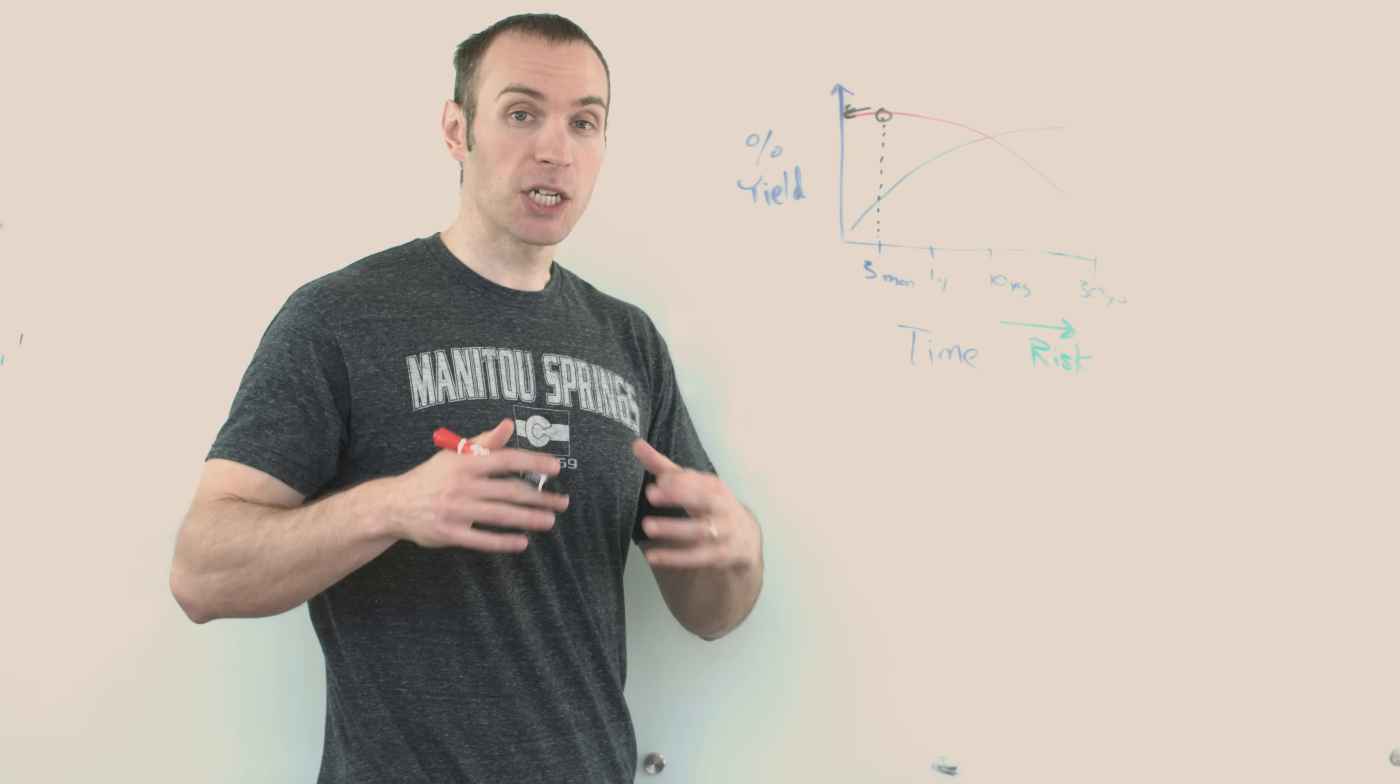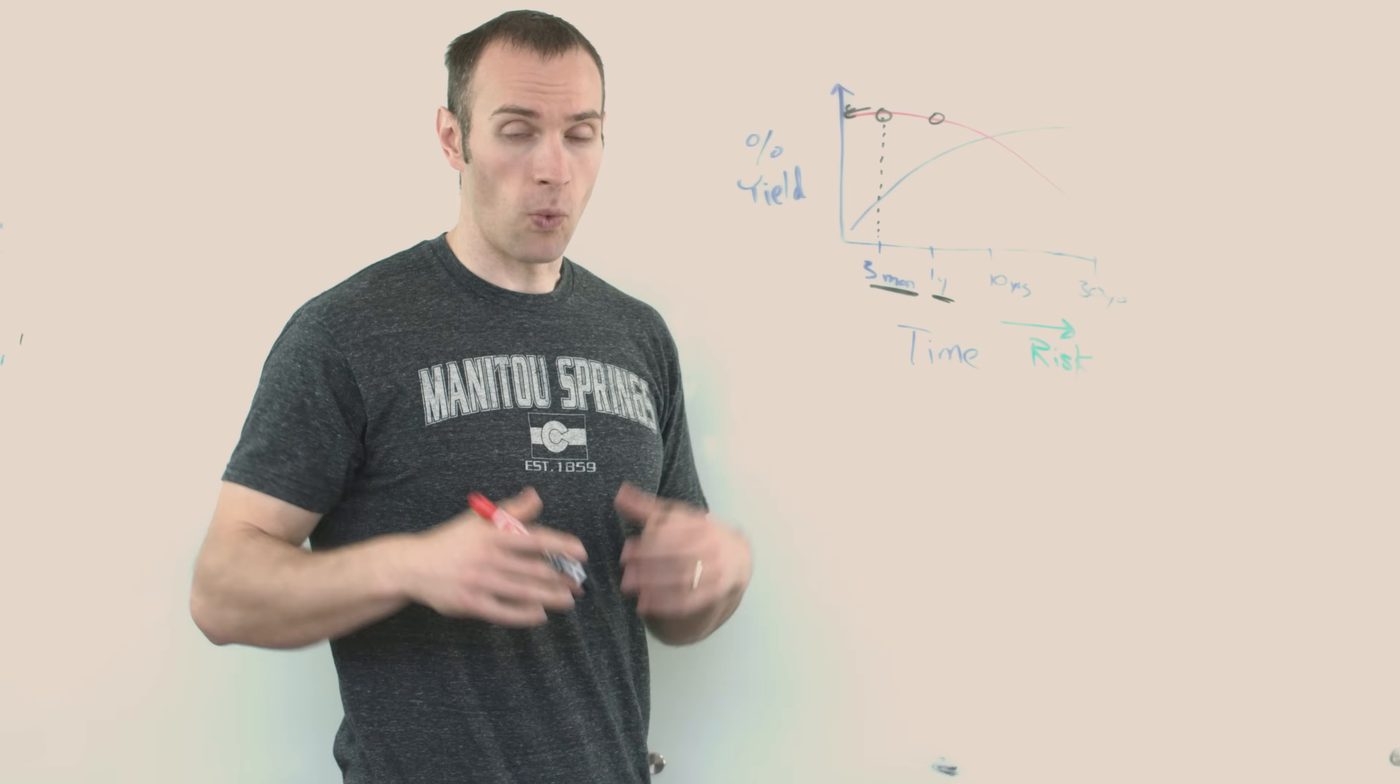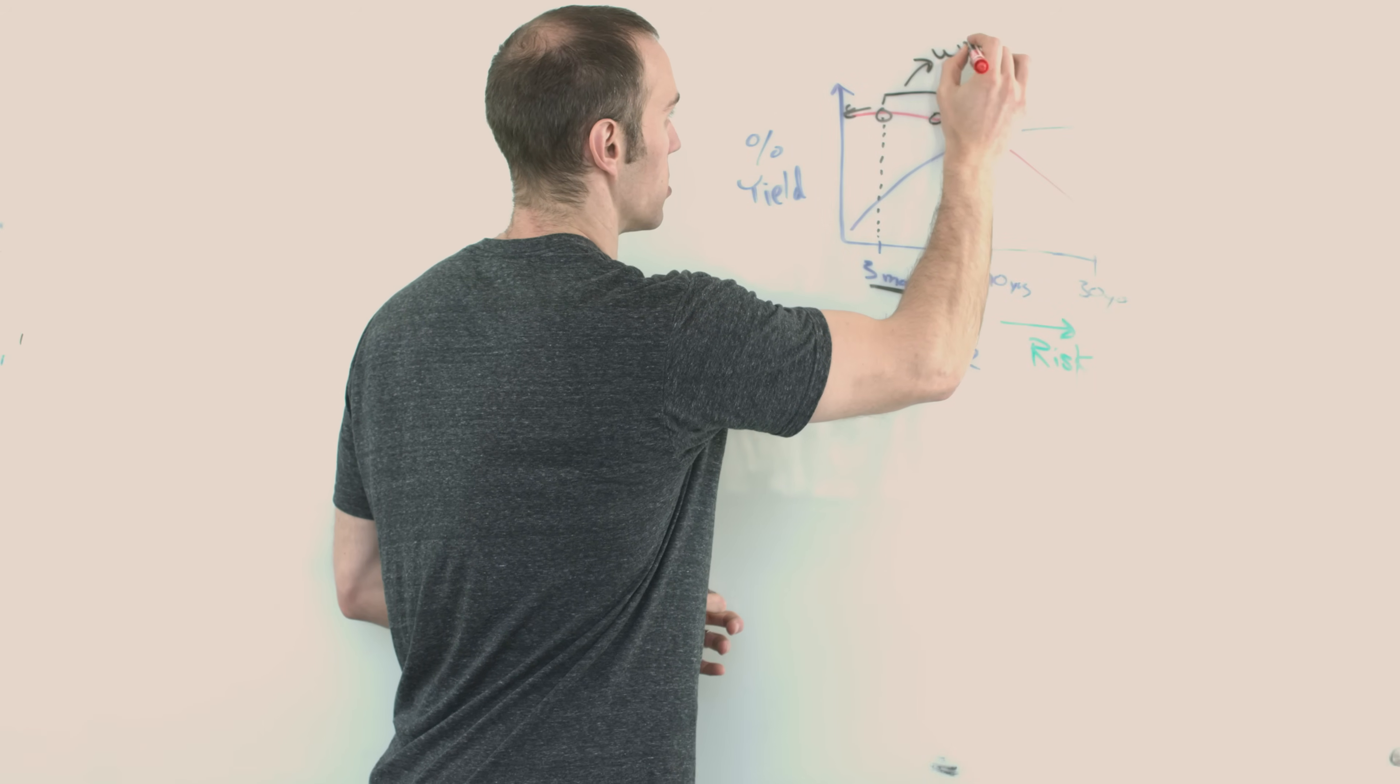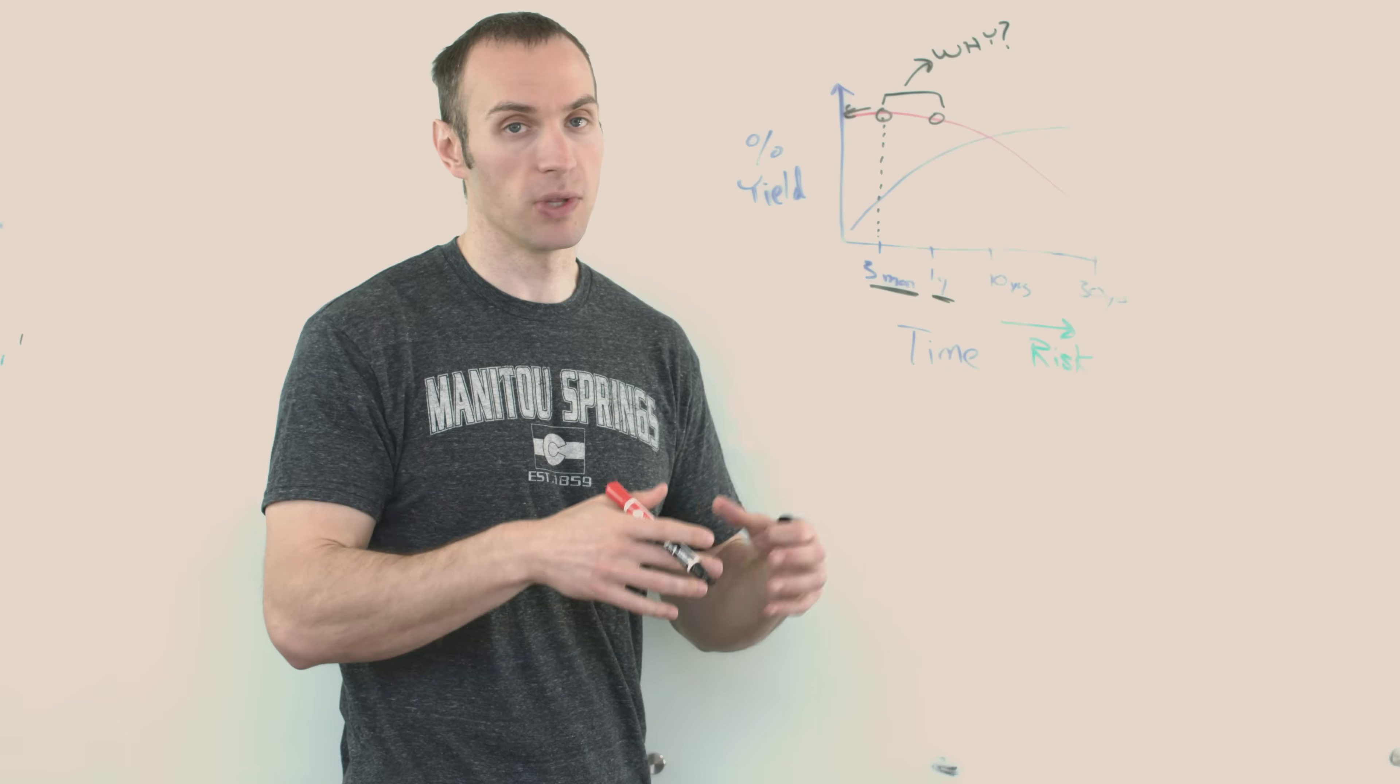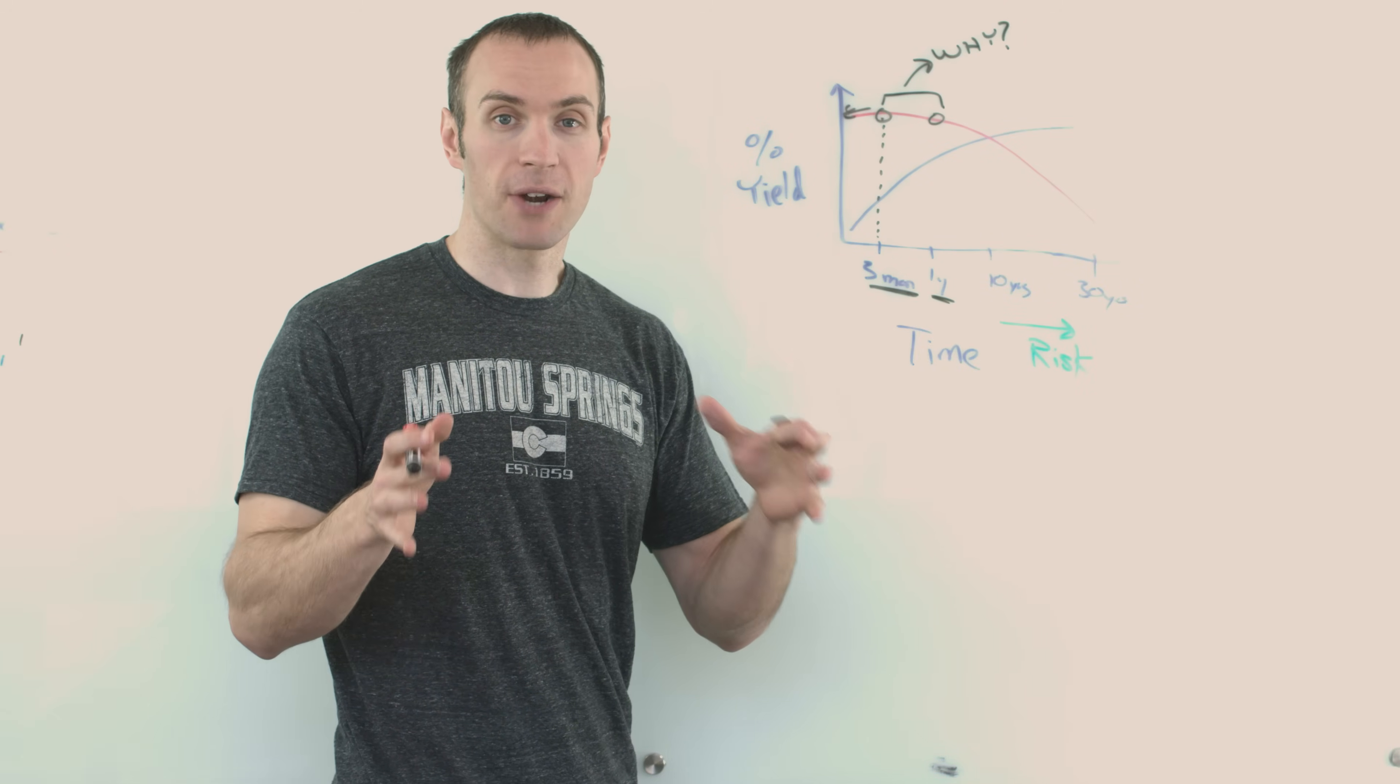But when yield curves go inverted, that is implying that actually people perceive the risk to be in the very near term. So right around these two areas, three months to a year, there is a lot of risk. And why is there a lot of risk? Well, that's where the whole theory comes into it. So in this section right here, between these two points, and I'll put why, meaning why is there perceived risk? I mean, you could have all sorts of theories, well, because the economy's about to do this. The economy's about to do this. This indicator is implying that that is gonna happen. And like I said, there's all sorts of opinions on why this happens.